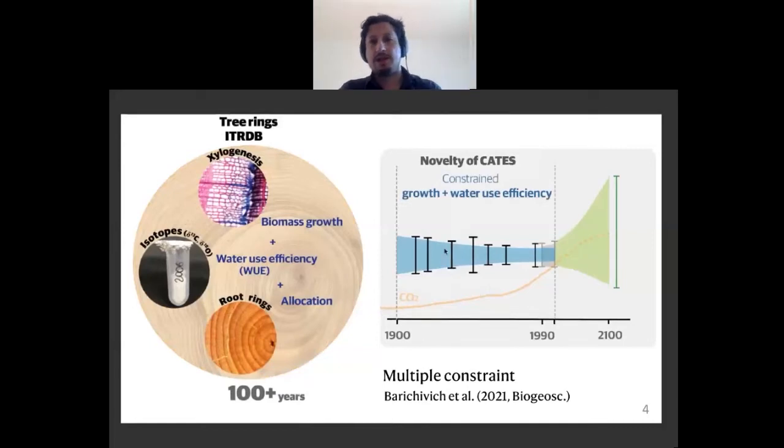The novelty of this approach is that I will extract insight on tree growth and water use efficiency by looking beyond ring width. For instance, ring width and xylogenesis measurements tell us about changes in biomass growth, and stable isotopes in the same rings tell us about water use efficiency at the leaf level, and tree rings in the roots tell us about changes in allocation to below ground growth.